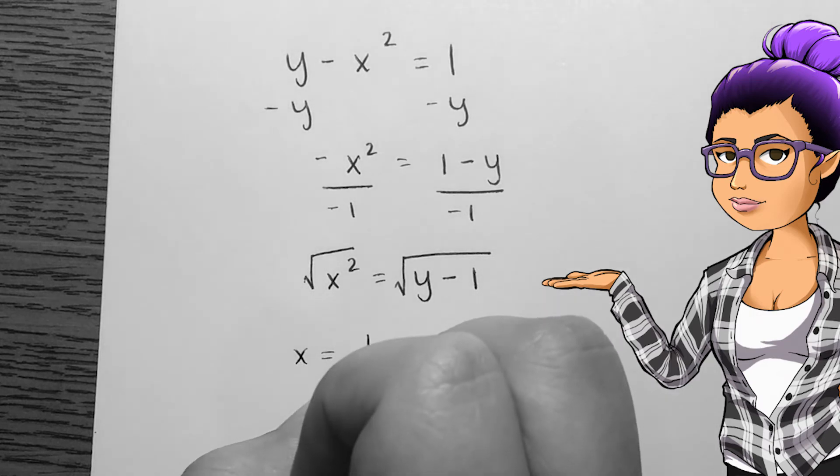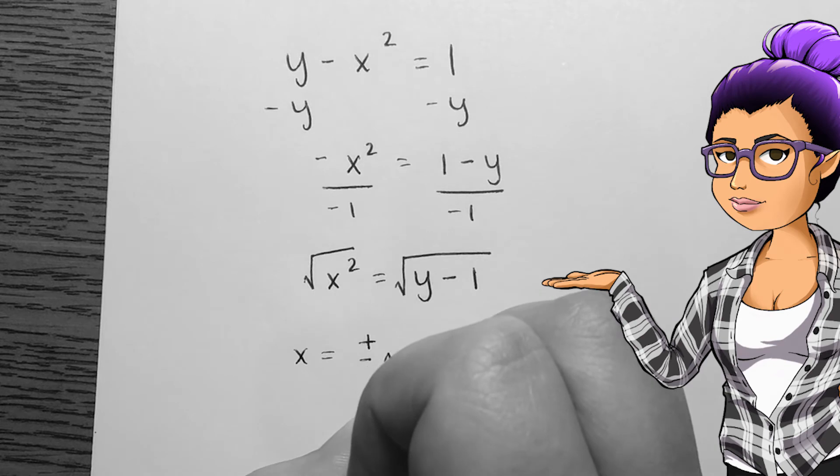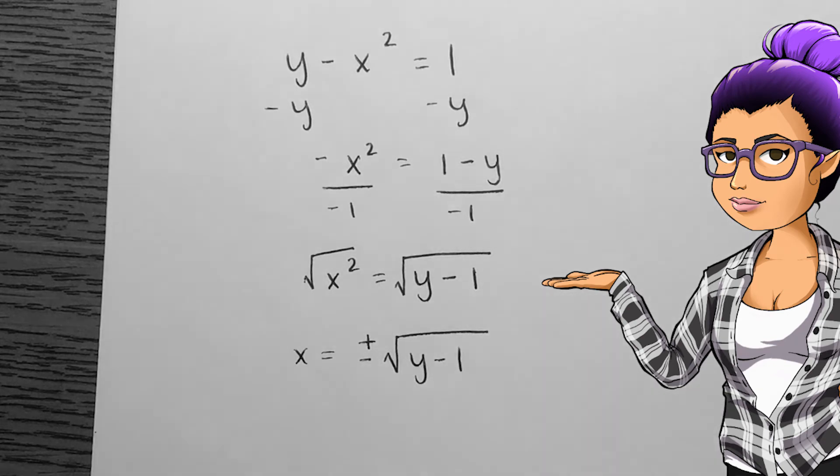I now have a complication. It's unclear whether the positive version or the negative version of the square root would have given me x squared in the first place, so I need to consider both.